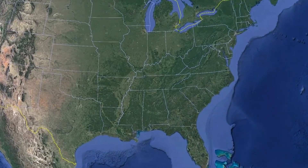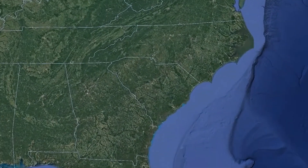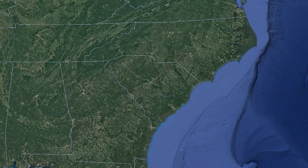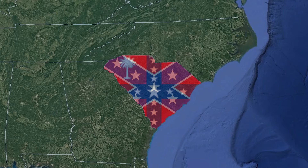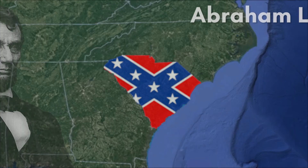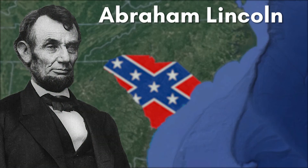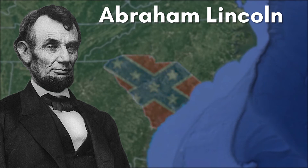South Carolina was the first state to secede, and was an independent republic for six weeks before becoming a member of the Confederate States. This was in response to Abraham Lincoln being elected president. The state seceded from the Union on December 20th of 1860.